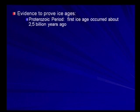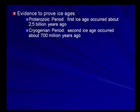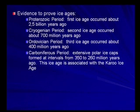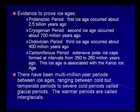Looking at evidence for ice ages: the Proterozoic period — the first ice age occurred about 2.5 billion years ago. The Cryogenian period — the second ice age occurred about 700 million years ago. The Ordovician period — the third ice age occurred about 400 million years ago. The Carboniferous period — extensive polar ice caps formed at intervals from 350 to 260 million years ago, associated with the Karoo ice age.